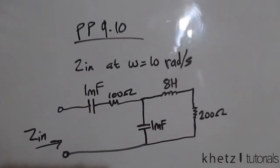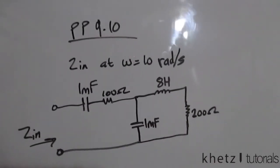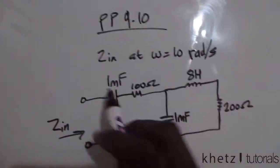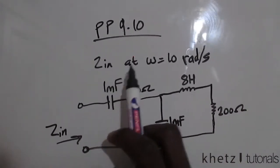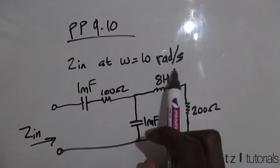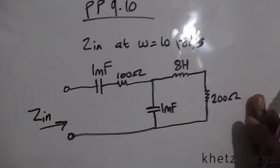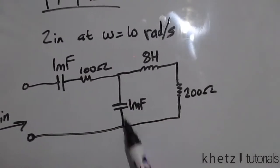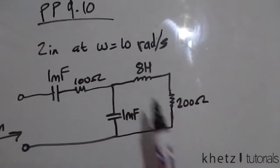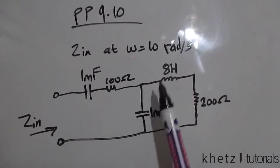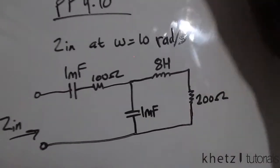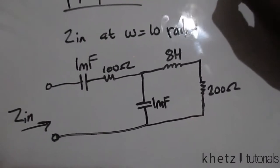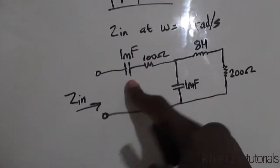Welcome to Cat's Tutorials. In this video I'll be doing practice problem number 10. You're asked to find the input impedance at an angular frequency of 10 radians per second. The components are given in millifarads and henrys, so we need to transform everything into impedances.